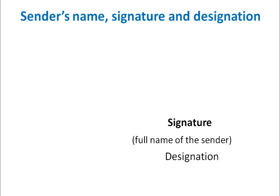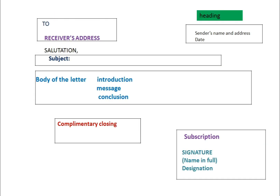After writing the subscription, we have to write the sender's name, signature, and designation. After the subscription part, we write the signature. When writing the signature of any formal letter, we should write the full name and designations, and if there are any particulars, we can mention them here.